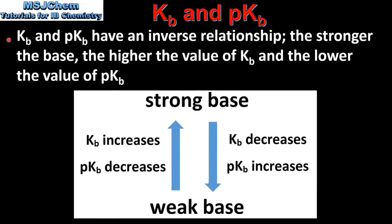Kb and pKb also have an inverse relationship. The stronger the base, the higher the value of Kb and the lower the value of pKb. As we go from a weak base to a strong base, the value of Kb increases and the value of pKb decreases. And as we go from a strong base to a weak base, the value of Kb decreases and the value of pKb increases.